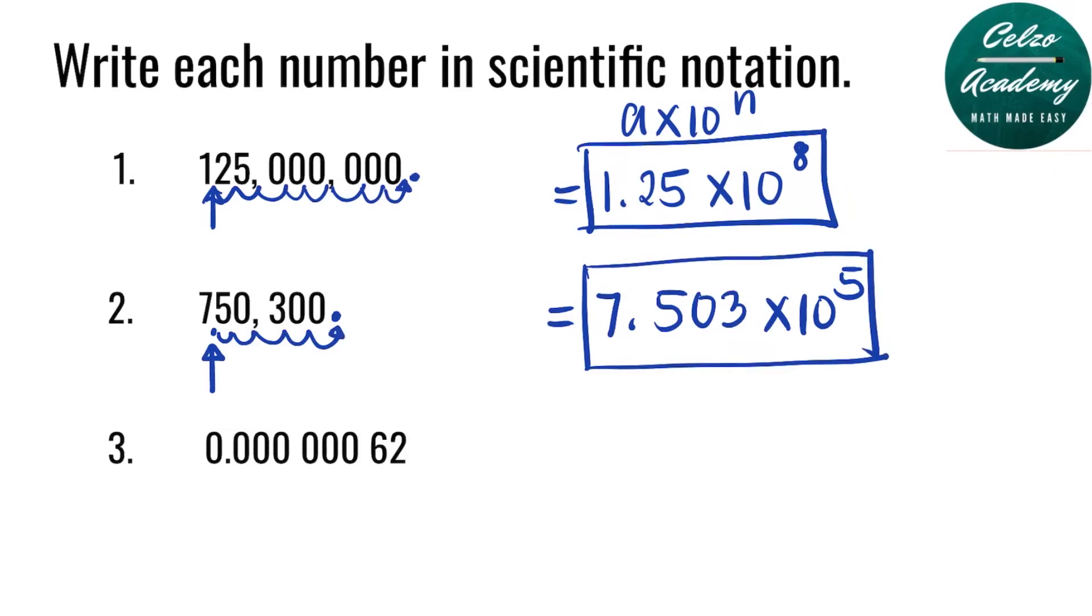Question number 3. The placement of the decimal point should be after the 6. That way, we will have 6.2 times 10 to the power of n. What do you think is the power of n? Notice that in this problem, we need to find how many numbers after the new decimal point. We have 1, 2, 3, 4, 5, 6, 7.